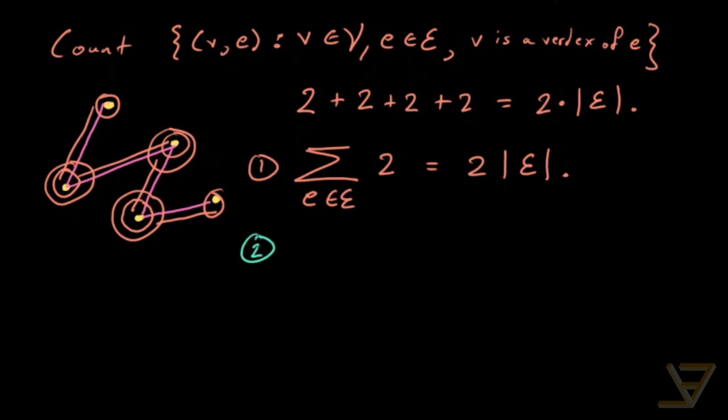The second way of counting it is to iterate through vertices, which gives us the sum of the degrees of v such that v is an element of the vertex set. That's because if we deal with this vertex, we have its edge here. And if we have this vertex, we have this edge and this edge. This vertex has this edge and this edge. This vertex has this edge and this edge, and this vertex has this edge. So we're just summing up the number of edges sprouting out of each vertex.